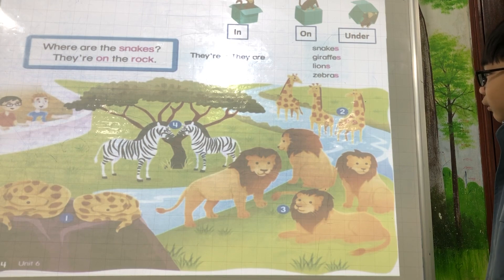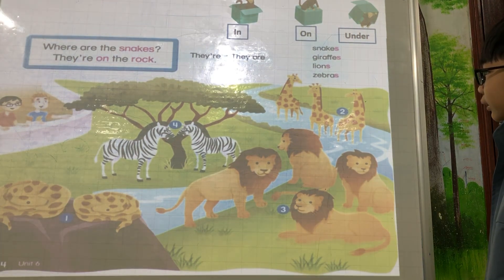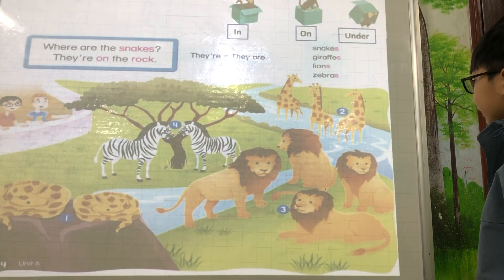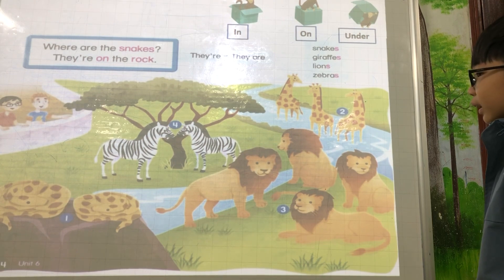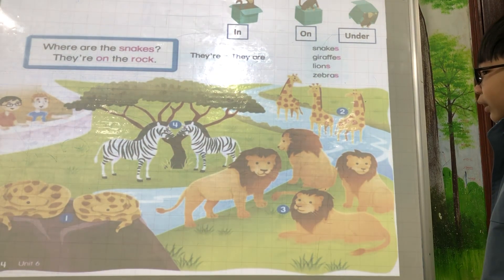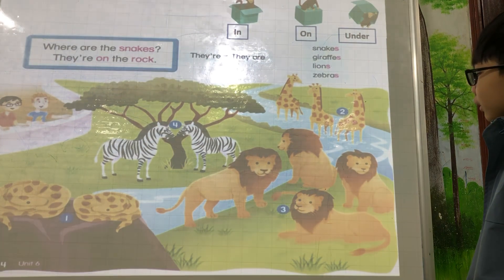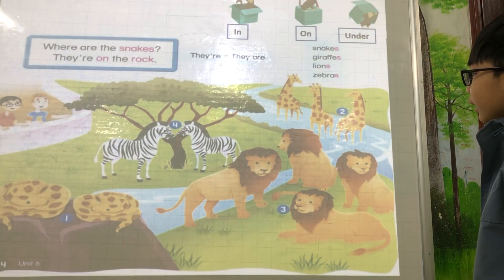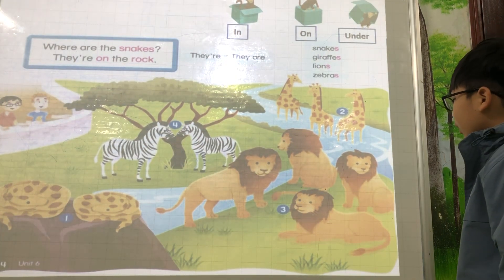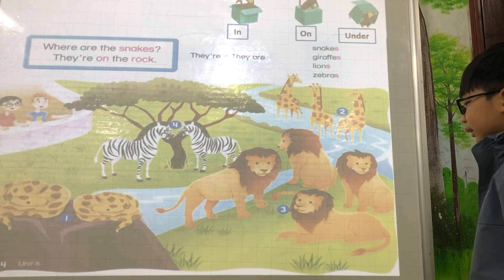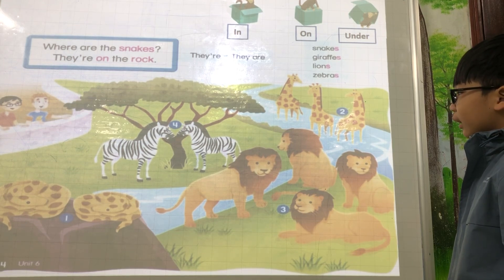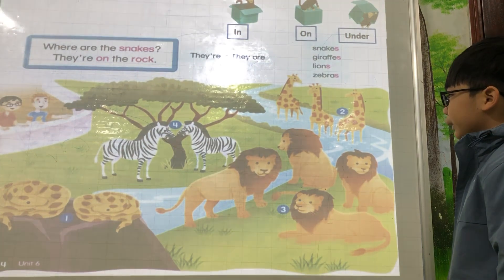Where are the giraffes? They are in the lake. What? They are in the river. Where are the lions? They are on the hill. Where are the zebras? They are under the trees.